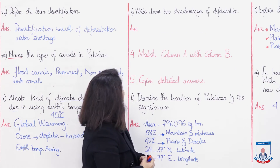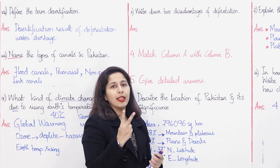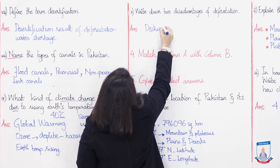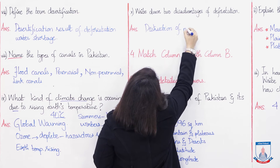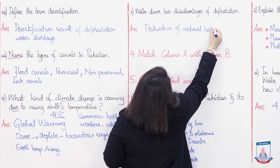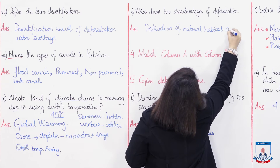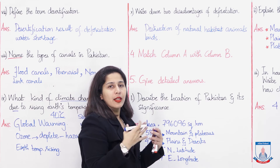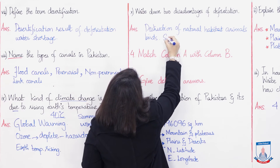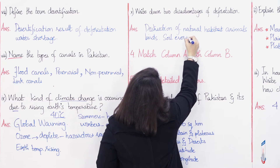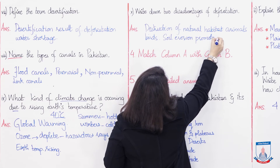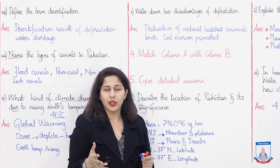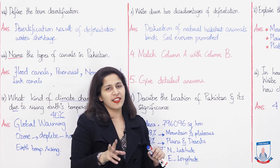The next question: Write down two disadvantages of deforestation — what are two harms of cutting trees? Excellent — first is destruction of natural habitat: the natural habitat of animals and birds is destroyed. Second, we decrease the cover for soil erosion — soil erosion is promoted. You can also discuss that deforestation increases chances of flooding from rainwater in nearby areas. You can write down any two.